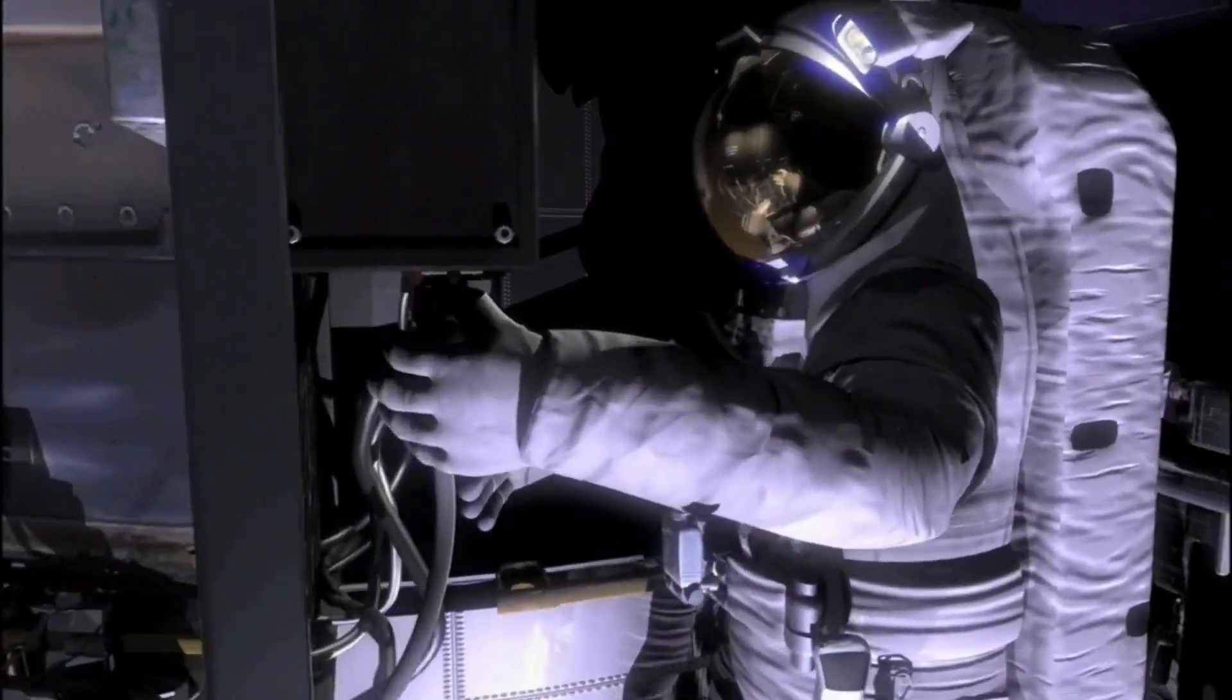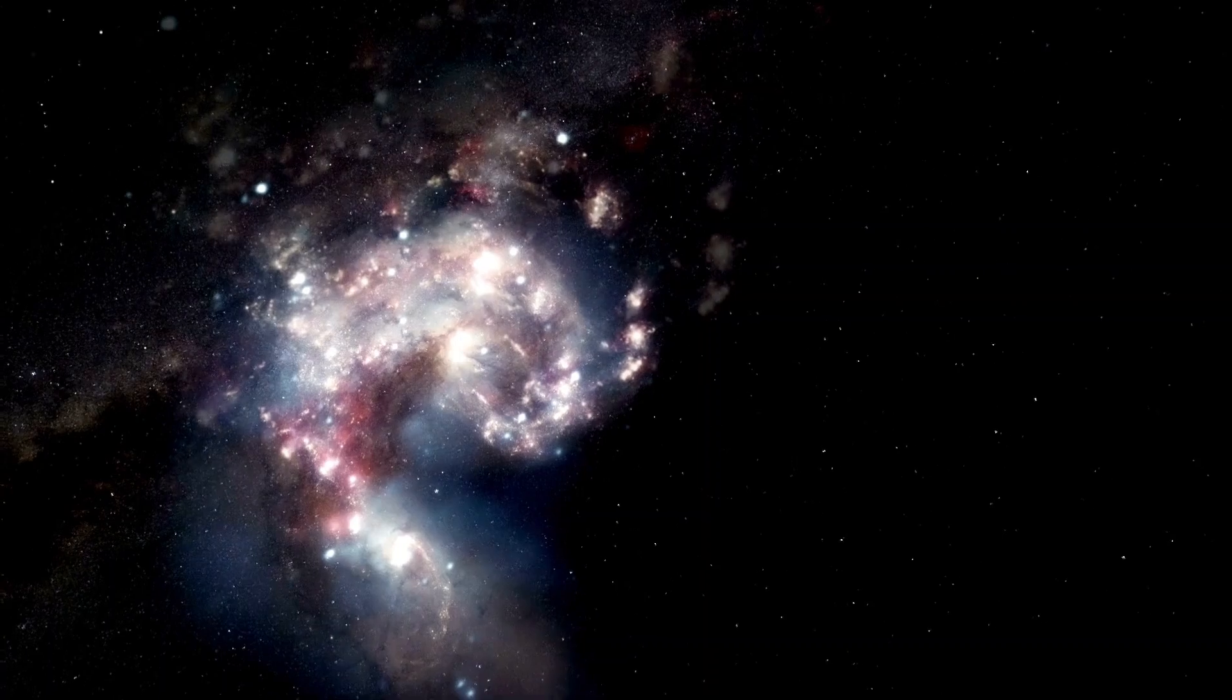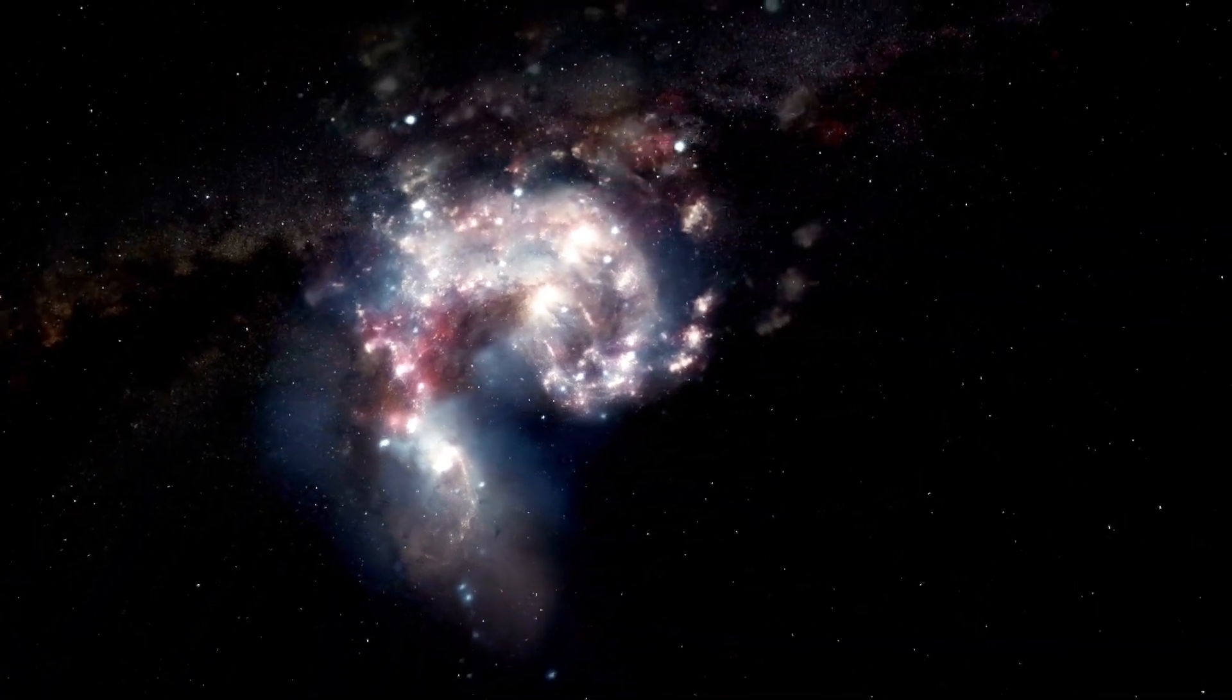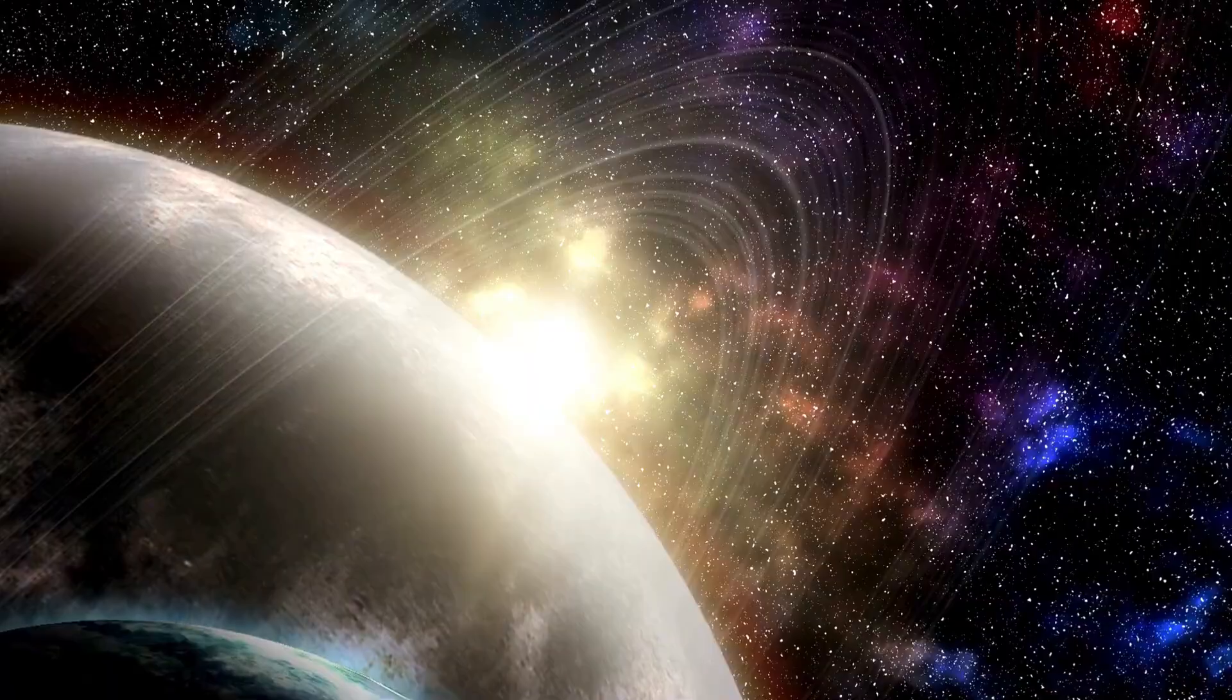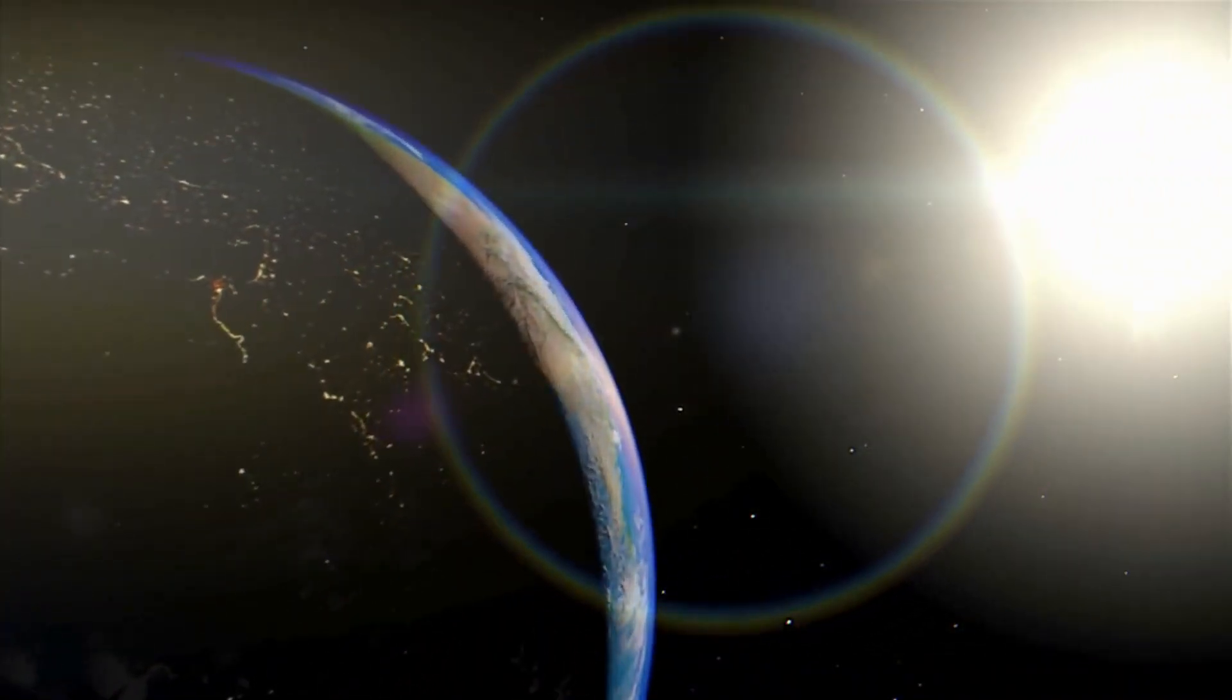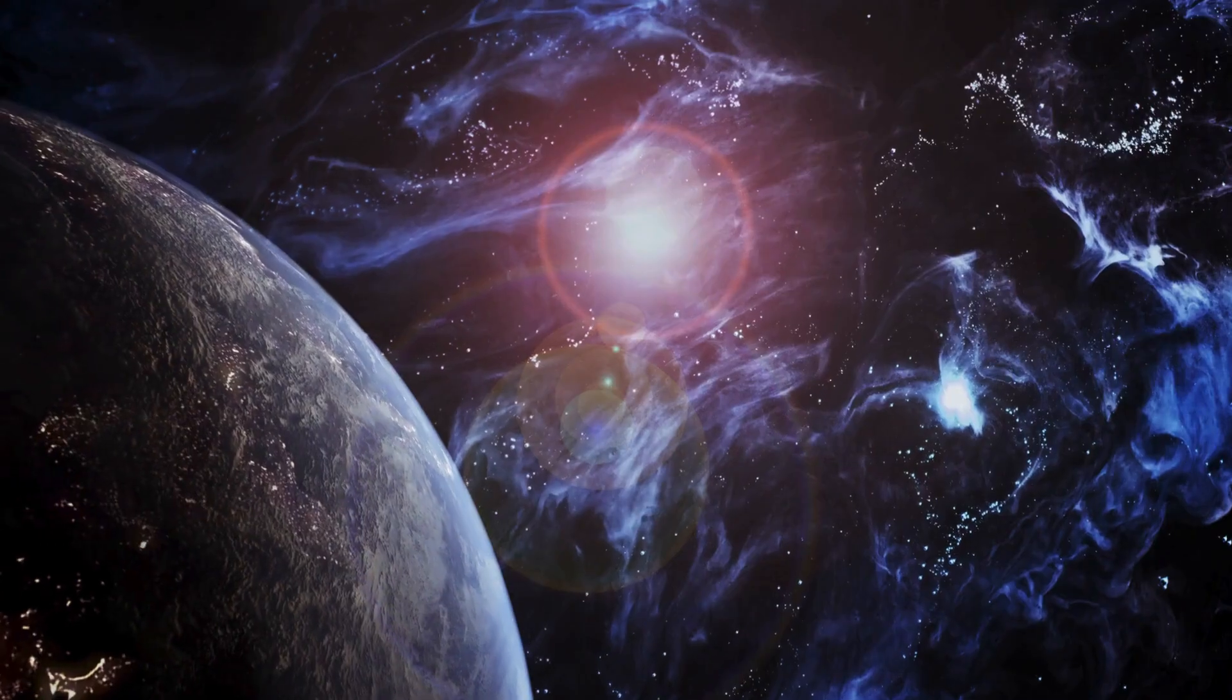Betelgeuse, Orion Constellation's most famous star, and now a bright red supergiant, is nearing the end of its life. It will likely explode as a supernova, becoming visible during the daytime from Earth. But why is this so extraordinary to us Earthlings?